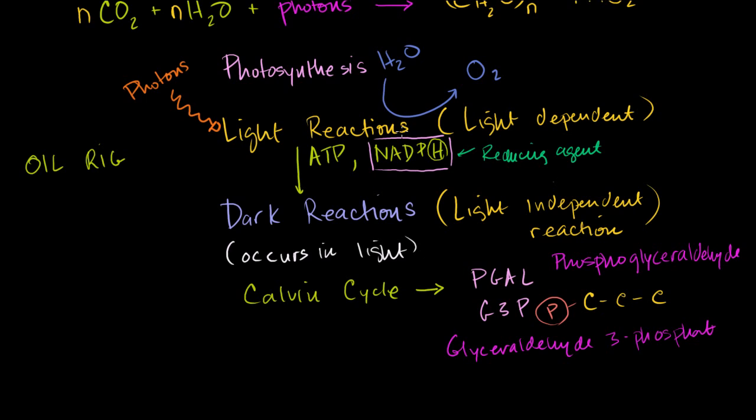And it takes in water, oxygen gets spit out, ATP and NADPH get spit out, which are then used by the dark reaction or the Calvin cycle. Or the light independent reaction, because these still occur in the light, they just don't need photons. So they're the light independent reaction.